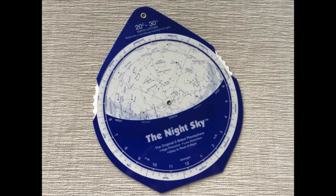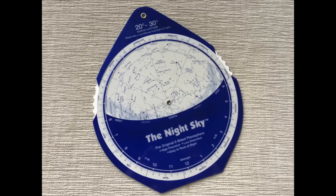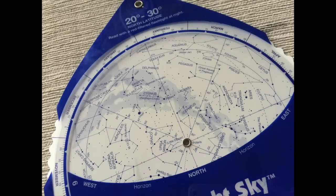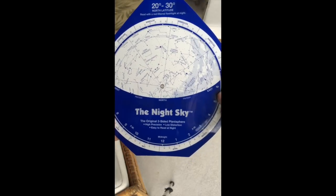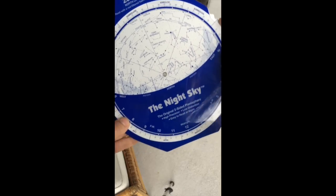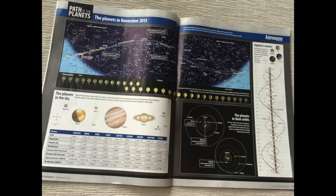When reading a star map, it is important to determine the orientation of the map. Some charts are designed for specific dates and times, while others are more general. Make sure you understand which direction represents north, south, east, and west. For a planisphere, each side represents a different direction — one shows the sky facing north and the other facing south. You can turn the star wheel to specific dates and times for a more accurate view, though this type of chart will not show the movement of the planets.